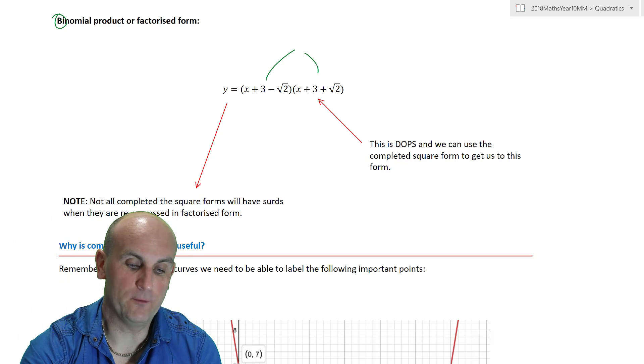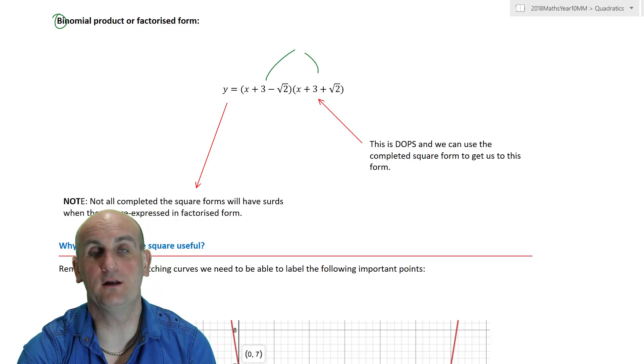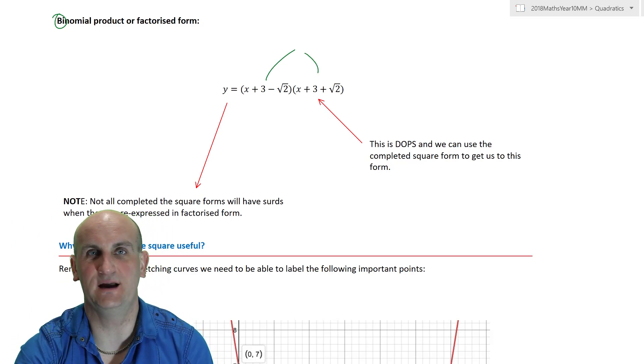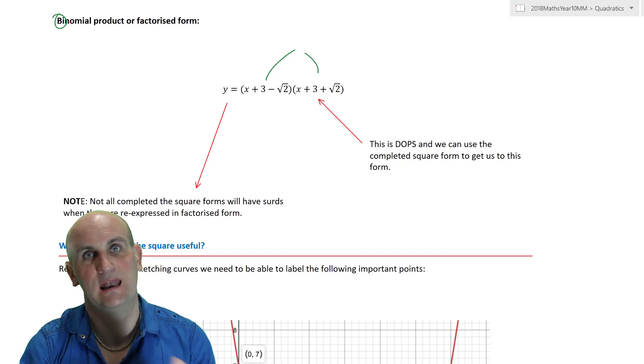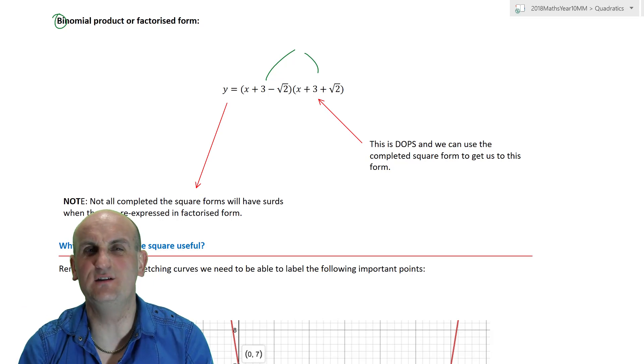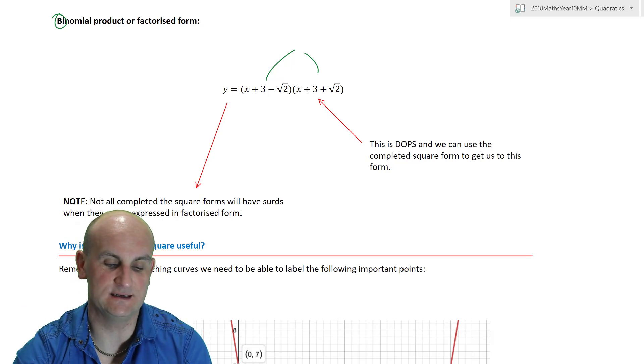But, having something in this form, bi meaning 2, product meaning times, so two sets of brackets tied together, actually helps us use all sorts of other maths later on in a slightly different video to help me solve these, to actually find the physical values of the x-axis intercepts.